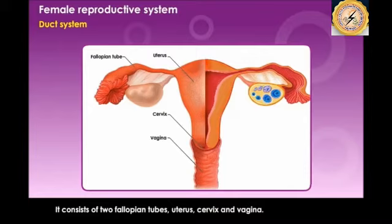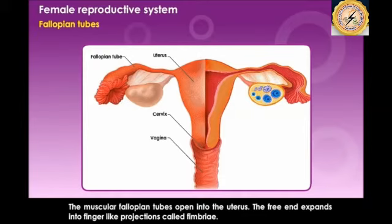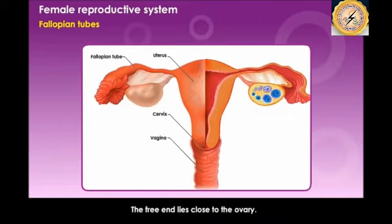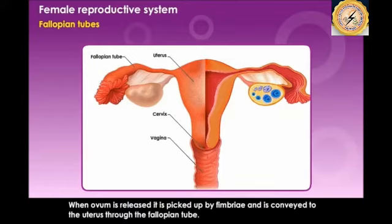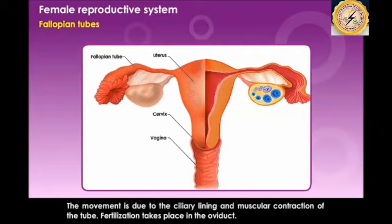The duct system contains two fallopian tubes, the uterus, the cervix, and the vagina. The muscular fallopian tubes open into the uterus, and the free end expands into finger-like structures known as fimbriae, which lie close to the ovary. When the ovum is released, it is picked up by the fimbriae and conveyed to the uterus through the fallopian tube by ciliary lining and muscular contraction. Fertilization takes place in the oviduct.